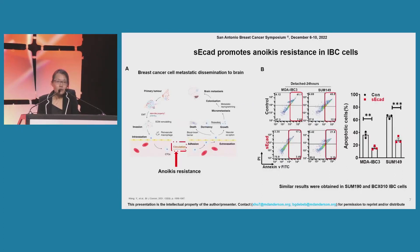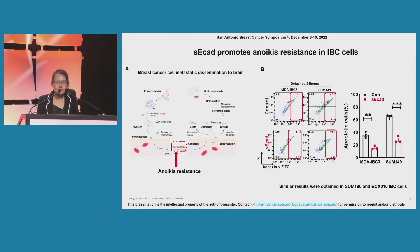As we all know, during the progression of metastasis, anoikis resistance is known to facilitate the survival of cancer cells that detach from the original sites, thereby facilitating metastasis. So we wanted to know if soluble e-cadherin also affects anoikis resistance ability in IBC cells. For this, cells were treated with poly-HEMA for 24 hours, then analyzed by flow cytometry. We can see clearly that the soluble e-cadherin group had significantly inhibited anoikis, meaning more surviving cells.